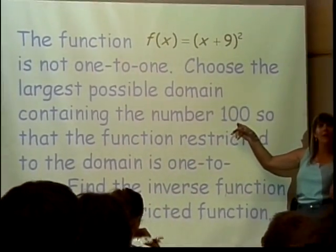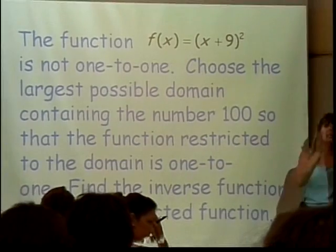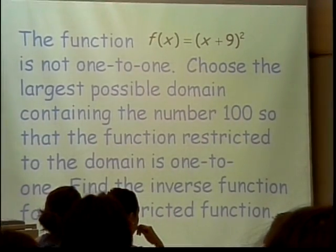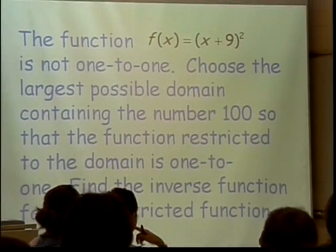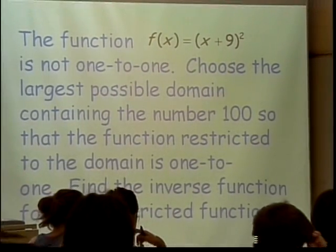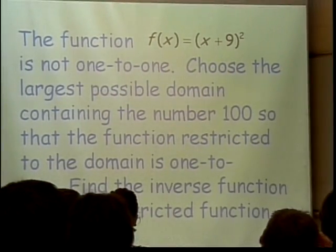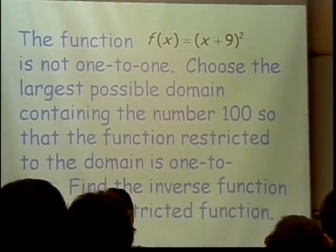In other words, I want the value x equals 100 in there. Is that going to be the part to the left or the part to the right? It'd be the part to the right. Because to the right of the vertex is where x equals 100 falls.